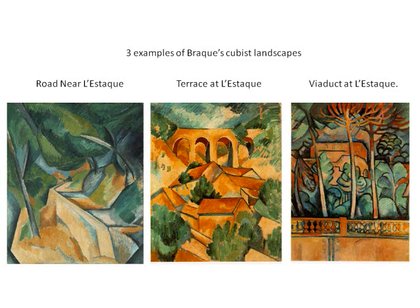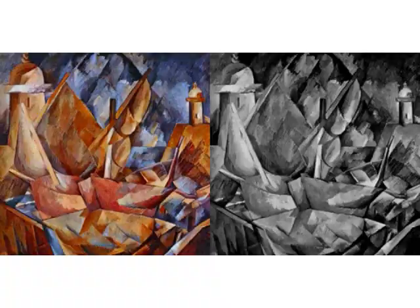In the summer of 1908, Braque painted several Cubist landscapes, which were rare in Cubism. Some examples were Road near L'Estaque, Terrace at L'Estaque, and Viaduct at L'Estaque. In September of 1908, Braque submitted six or seven canvases to the Salon d'Automne, but all were rejected. One of the jurors, Matisse, said that one of the paintings was made of small cubes, and this is traditionally taken to be the origin of the term Cubism.